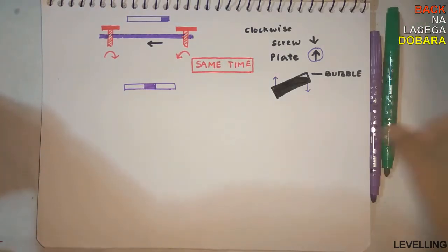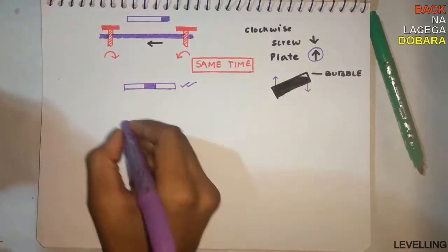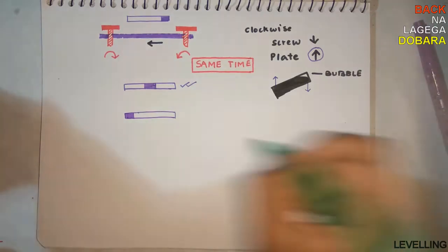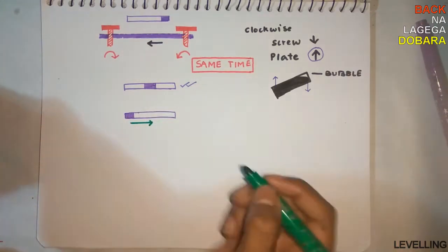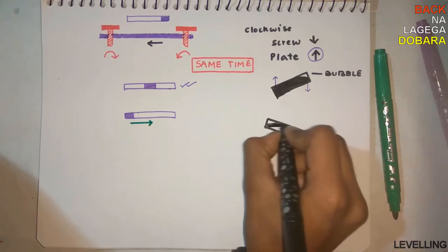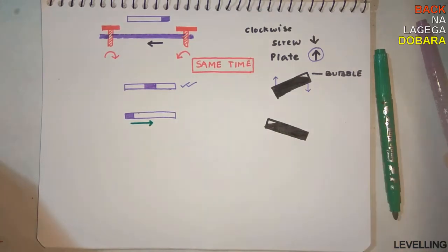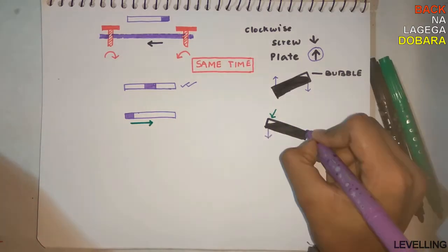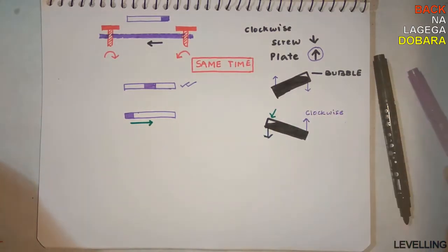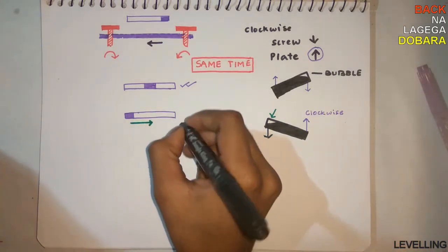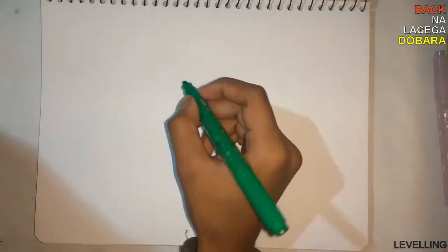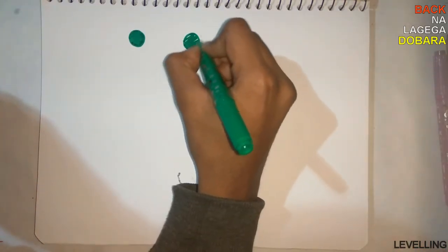Let's take another example. Let the bubble be on the left side. Forget about the plates - we want the bubble to go right. We want the right to go up. Up means clockwise. Clockwise means the right side should go clockwise, the left will be anticlockwise. The shortcut method is the thumb rule.